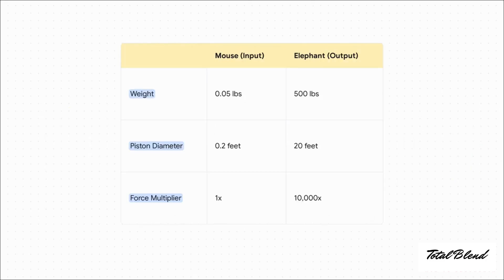Let's put some actual numbers on this to see how it works. Okay, so a mouse, maybe 0.05 pounds, pushes on a piston that's just a couple of inches wide. On the other side, we've got a 500-pound baby elephant standing on a piston that's 20 feet wide. Now, because the output piston's diameter is 100 times larger, its area is 100 times squared, or 10,000 times larger. And that's it. That's how the force multiplies. That tiny push from the mouse gets amplified 10,000 times, and suddenly it's enough to perfectly balance the weight of the elephant. Mind-blowing, right?